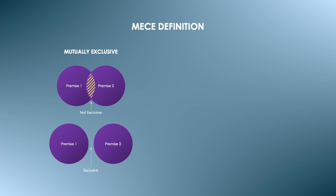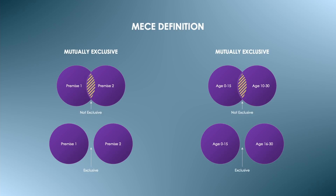Let's start with mutually exclusive. It means there can be no overlap between premises. A Venn diagram explains how this works. A good example is the use of brackets. If the brackets don't overlap, they are mutually exclusive. If they do overlap, they are mutually inclusive. The problem with overlapping premises is the lack of clarity they bring, as they depend on another premise to be complete.